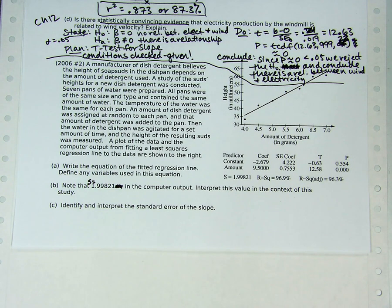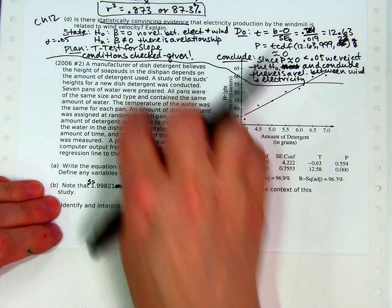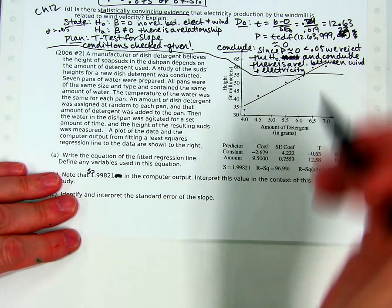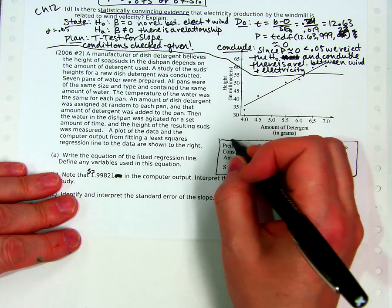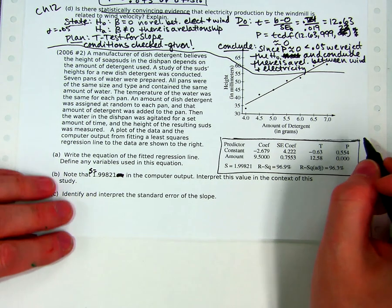We're talking about soap suds in a dish pan, and the amount of detergent you add to the pan determines the amount of soap suds. I'm not going to read that whole paragraph, but there's a plot and computer output which we're going to use to do this problem. That's very typical for stuff in chapter 12.